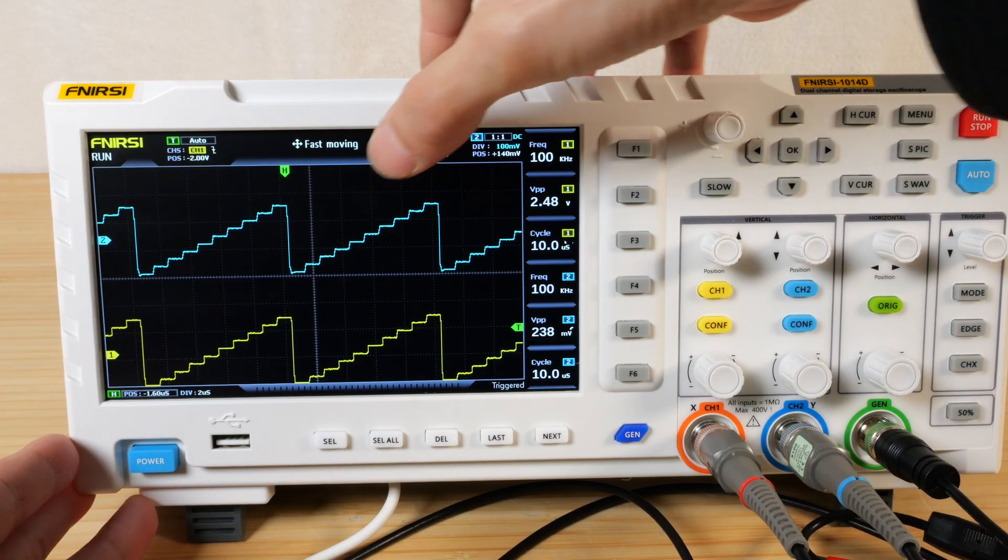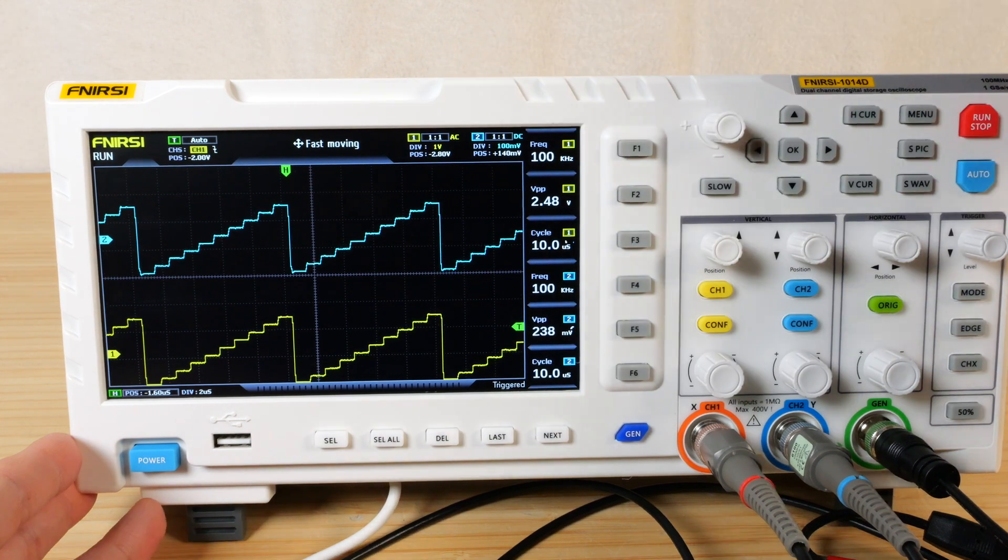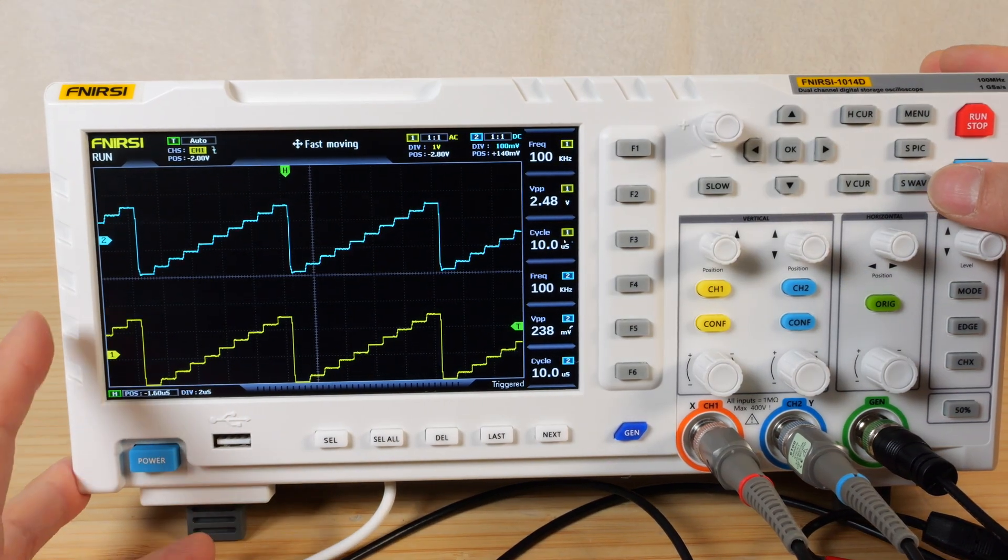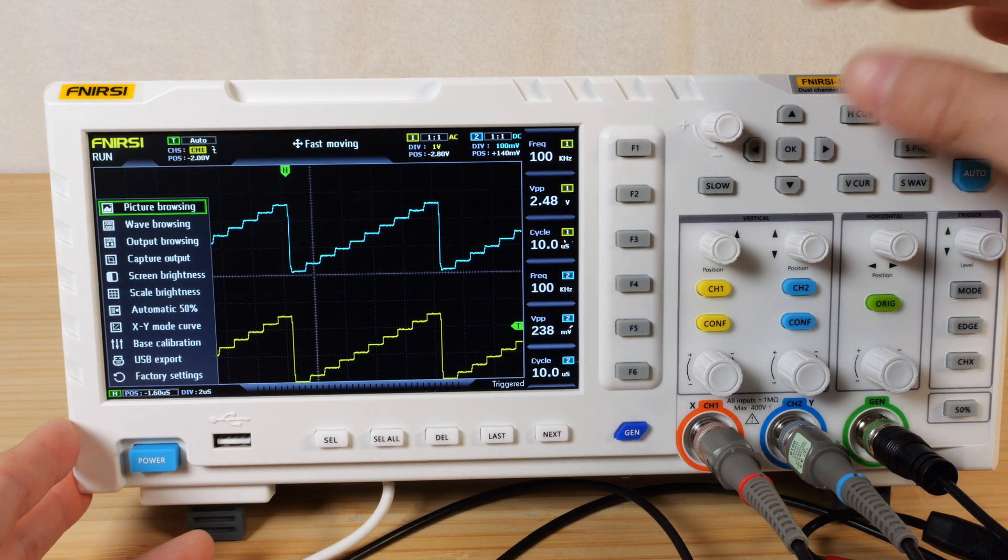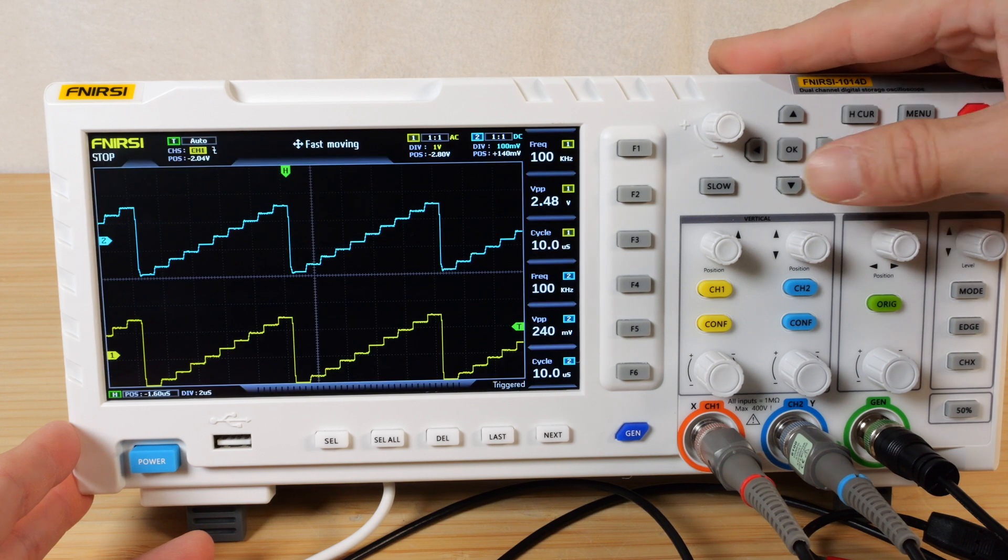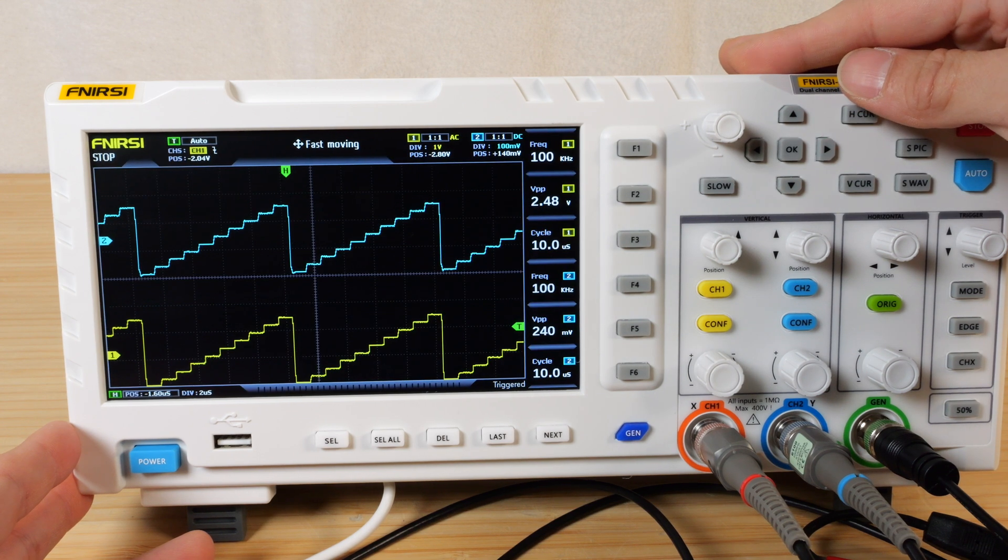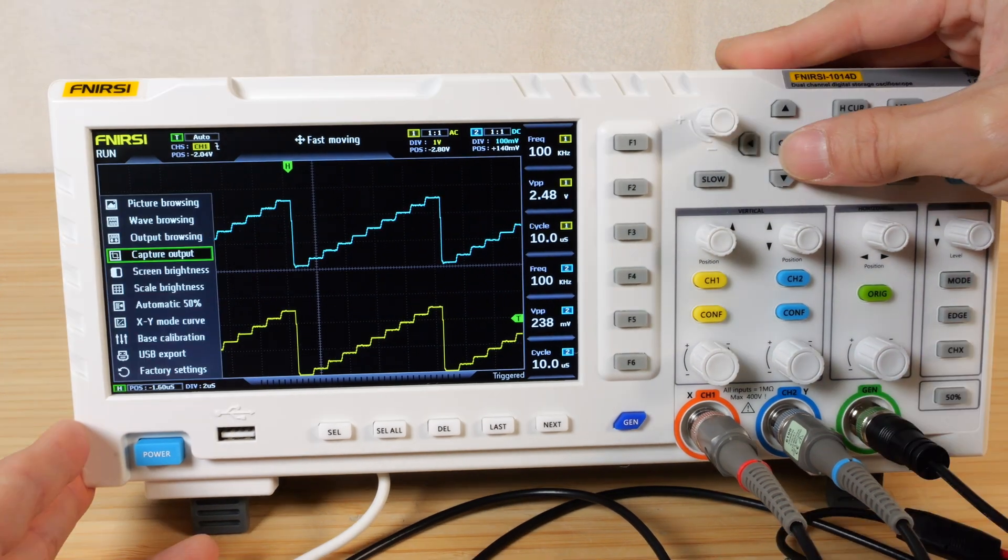Just for fun, I set up the function generator to output a step cycle. I've connected both channel 1 and channel 2 to it. And also this S-wave thing will actually save the actual data. S-wave. Data saved. Go here. Wave browsing. So we have some data here. If I push this, it will show the actual data. See if I can unplug this. It's still showing there.